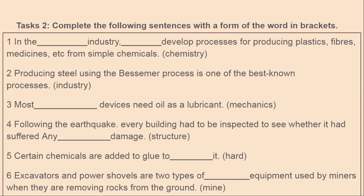Task two: complete the following sentences with the correct form of the word in brackets. Sentence one: in the blank industry, blank develop processes for producing plastics, fibers, medicines, etc. from simple chemicals. Answer: in the chemical industry, chemists develop processes for producing plastics, fibers, medicines, etc. from simple chemicals.